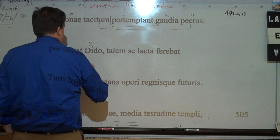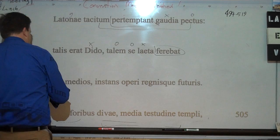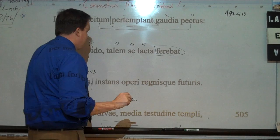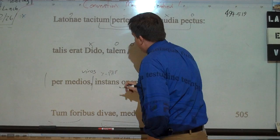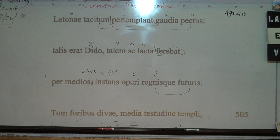Such was Dido. And talem se laeta ferebat, such, say, laeta, ferebat, per medios. And the happy woman bore herself, such, per medios, through the middle. And probably ellipsis, somewhere else, through the middle of the bed. And she's instans, PAP, nominative, urging on the work, it takes a dative, and the future kingdoms. So she's there, like, encouraging her people to keep working on Carthage.